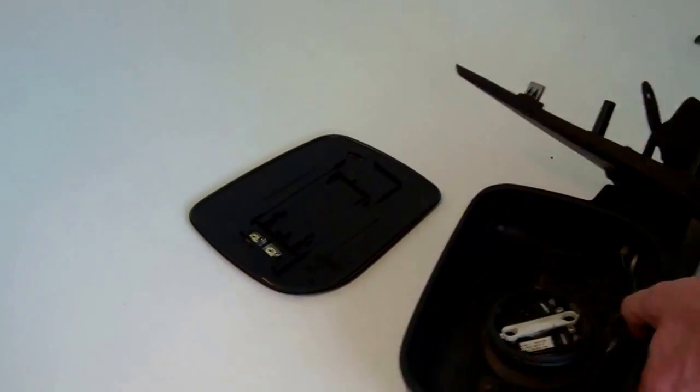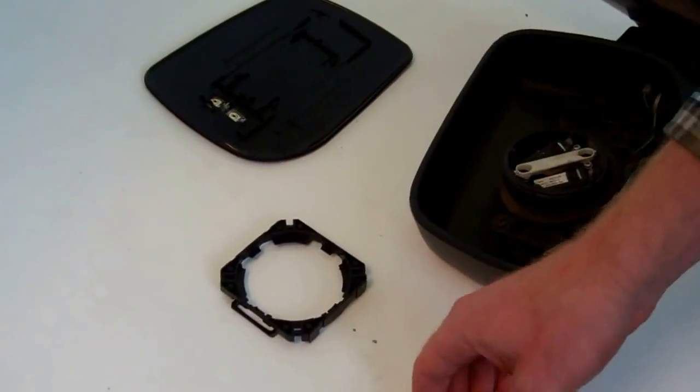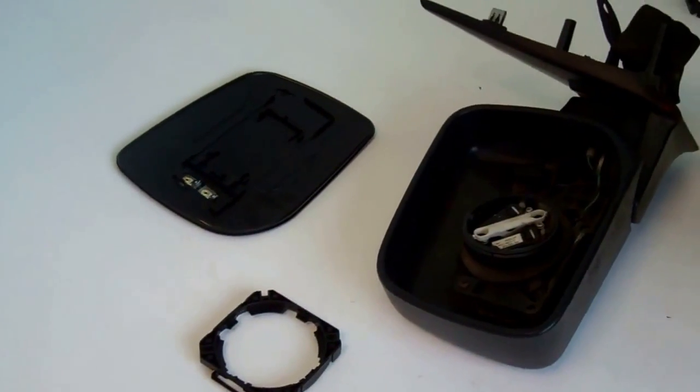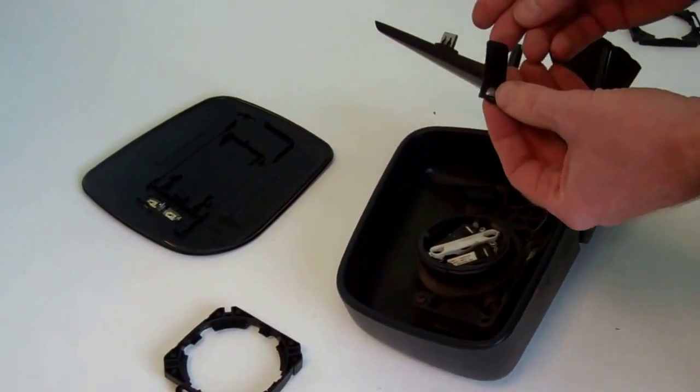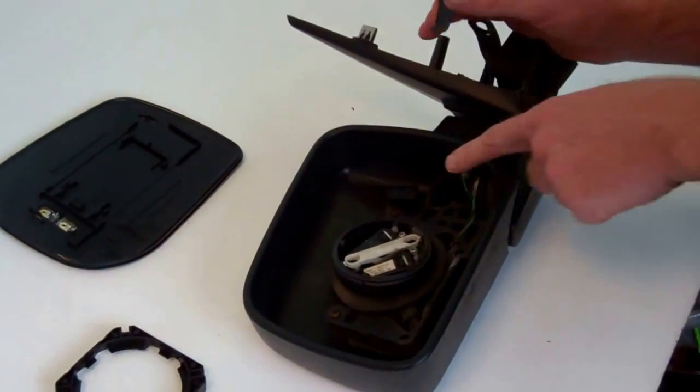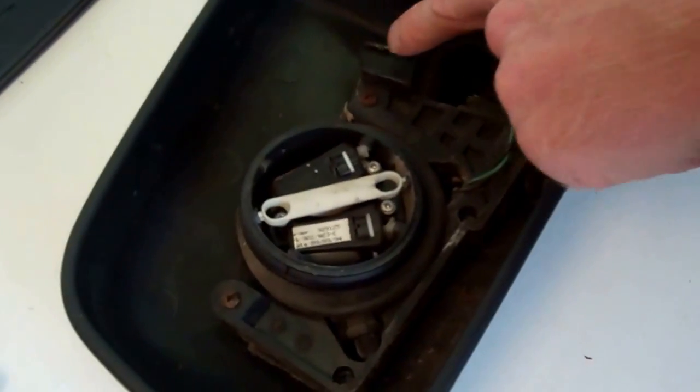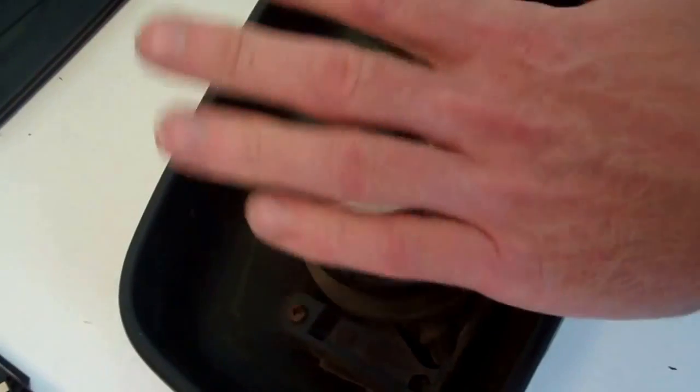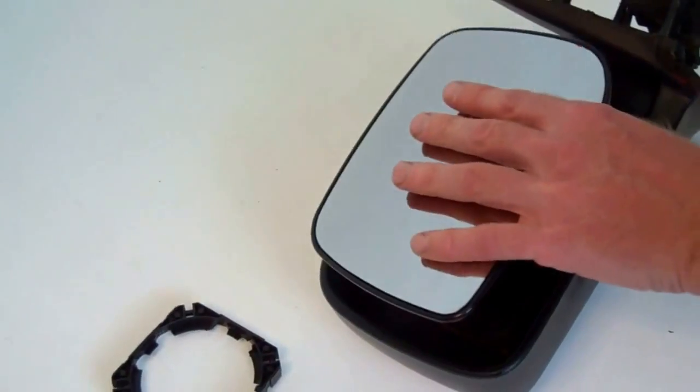Now also there is one of these little vibration dampers, and this goes—when we put it in the mirror—it goes in this little slot here and it stops the mirror sort of shaking. Well, that's at least what we reckon it does.